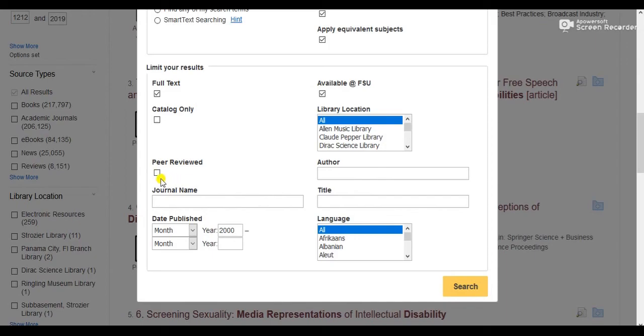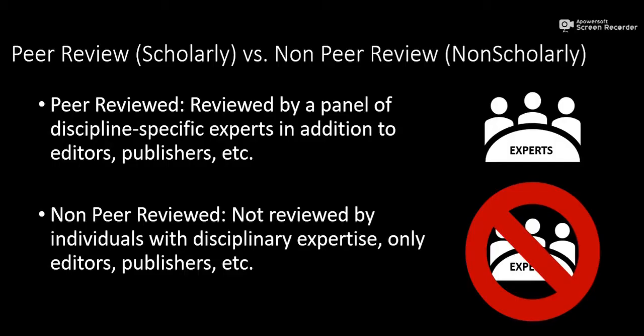I can also select peer review. Peer-reviewed sources, or scholarly sources, have been reviewed and affirmed by experts within a certain discipline. If I write an article on cardiovascular health for the New York Times, for example, my editor might look over my writing, but she's not an expert in heart medicine. A newspaper article is what we would call a non-peer-reviewed or non-scholarly source. A peer-reviewed source, however, would go to a panel of experts in that field who approve of the research that has been done, making the source more credible.